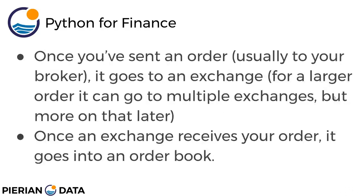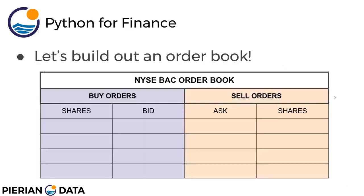So once you send out an order — that's usually to your broker — what ends up happening is it actually goes to an exchange. For a larger order it can go to multiple exchanges, but we'll discuss more on that later. It can also all be handled even within a broker, or go to something called a dark pool, which we'll talk about later. But once an exchange receives your order, it goes into an order book. Every exchange has their own order book.